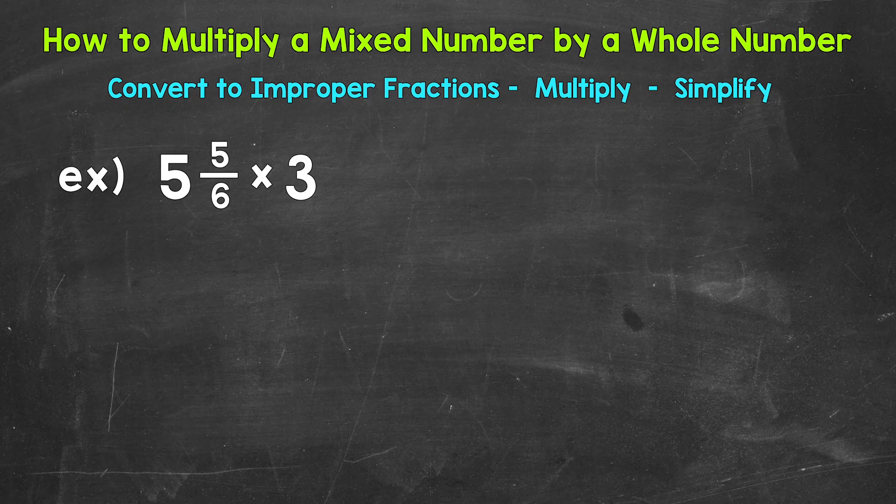Let's jump into our example where we have 5 and 5 sixths times 3. Now, the first thing that we want to do is convert our mixed number to an improper fraction and then write our whole number as an improper fraction. Let's start with the mixed number.